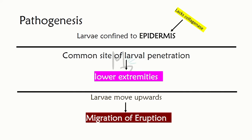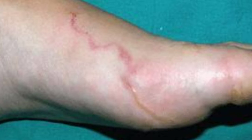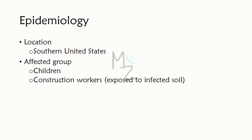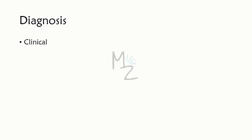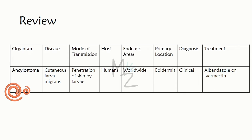The eruption appears to migrate as the larvae move a few centimeters daily. Clinical findings: pruritus and serpiginous rash. Epidemiology: the disease occurs primarily in the southern United States, in children and construction workers exposed to infected soil. Diagnosis is made clinically; laboratory testing is of little value.